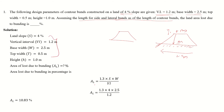The area locked or area loss equals 1.3 × S × base width. Substituting all values gives the area loss due to the bund.